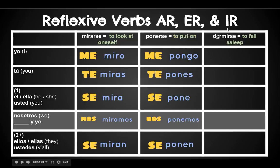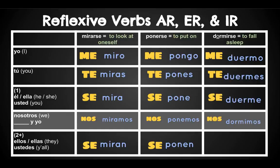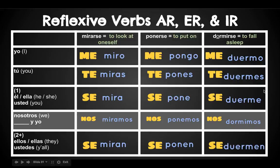Let's check out this IR verb — and it's a stem changer. So not only do we need to change the end and move the reflexive pronoun to the beginning, we also have to change the O to UE. So these things are getting more and more complicated. Yo me duermo, tú te duermes, él se duerme, nosotros nos dormimos — because in the nosotros form, we don't change the O — and then ellos se duermen.